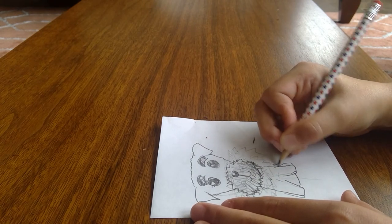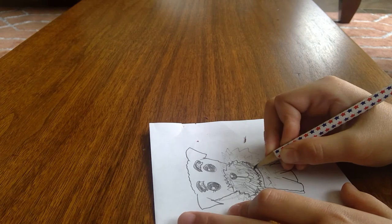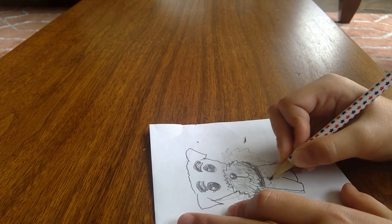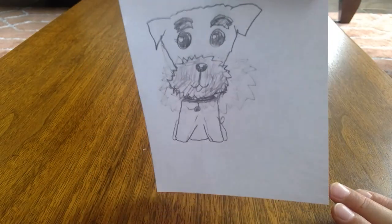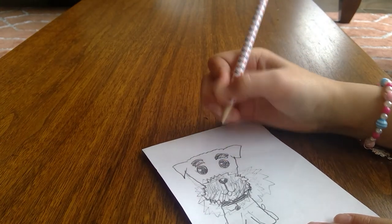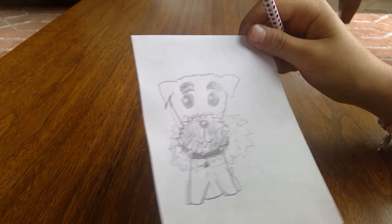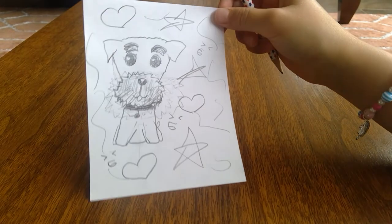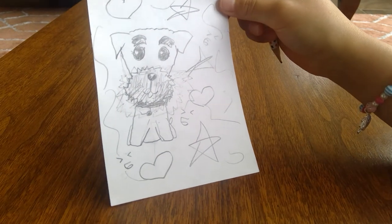And draw a little nub of a tail and a collar. Shade the collar and then draw a little tag. There, and your mini Schnauzer is done. And then you can name it, color it, and decorate it. Now it looks super cute.